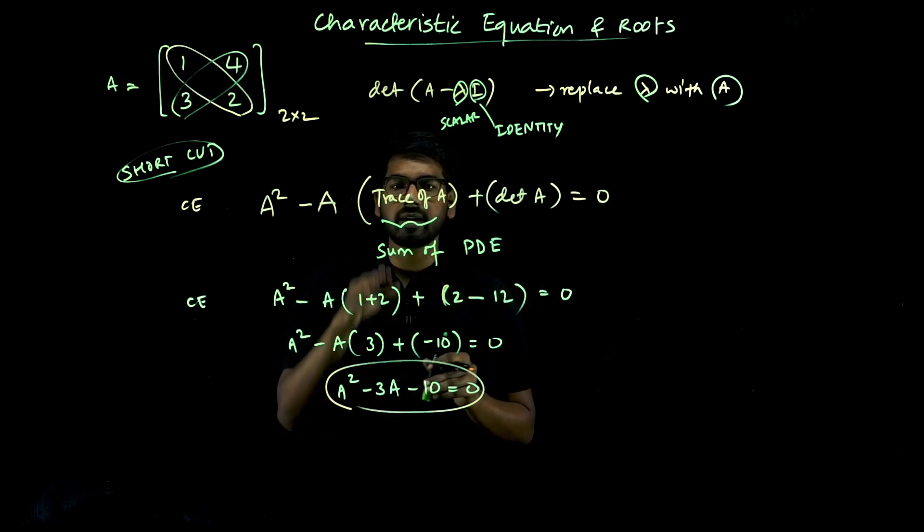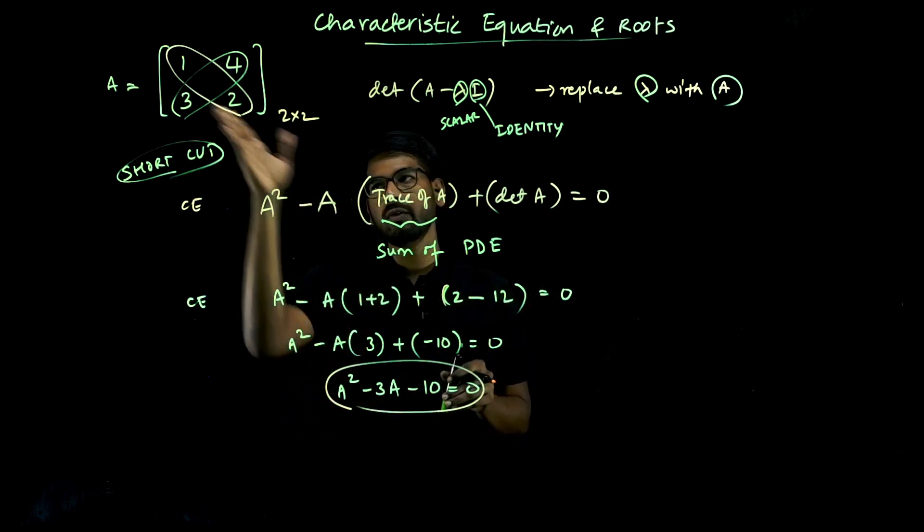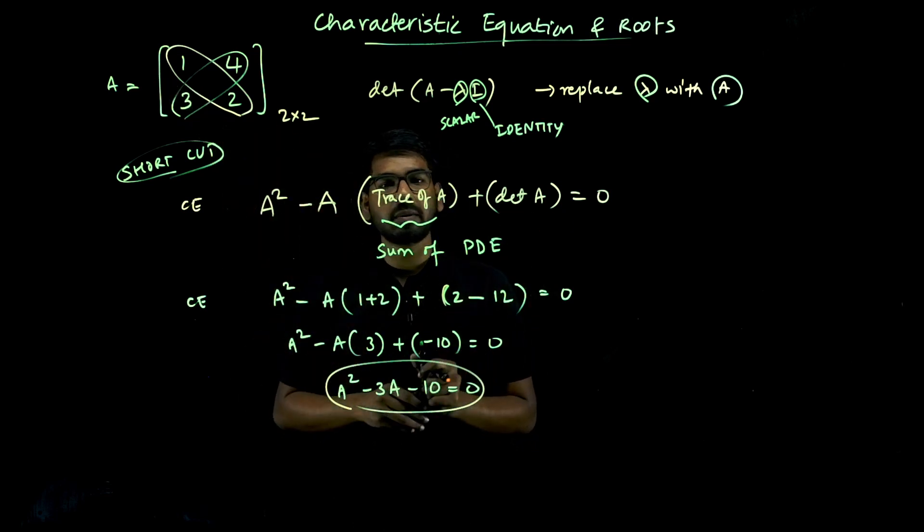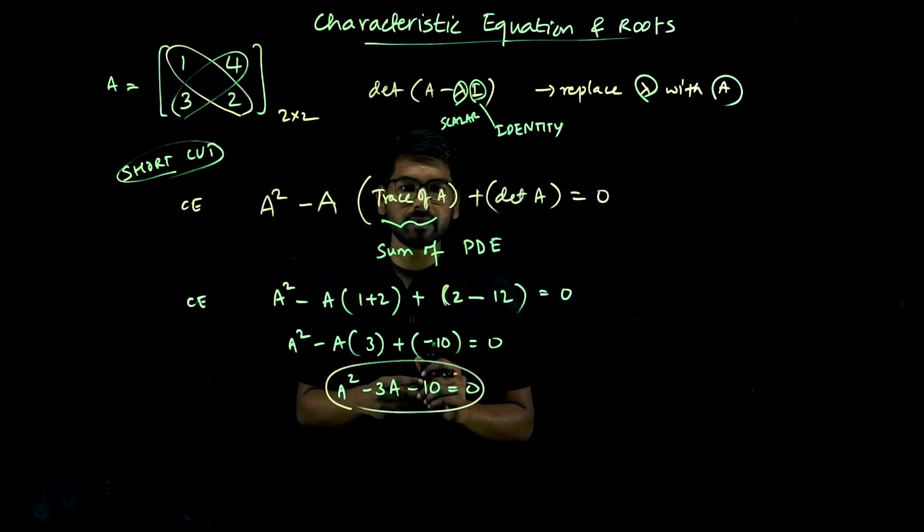We know how to find the determinant. Trace of A is the sum of principal diagonal elements. Very simple.